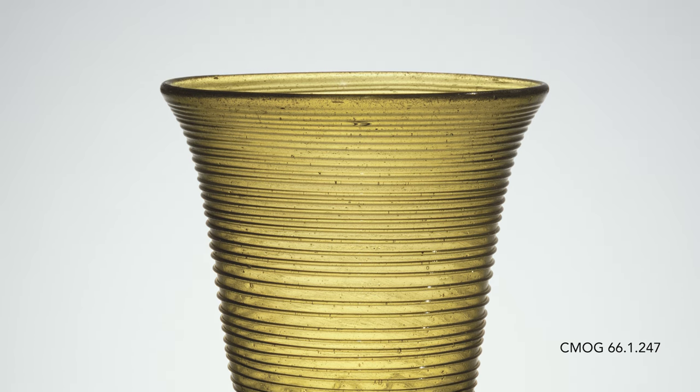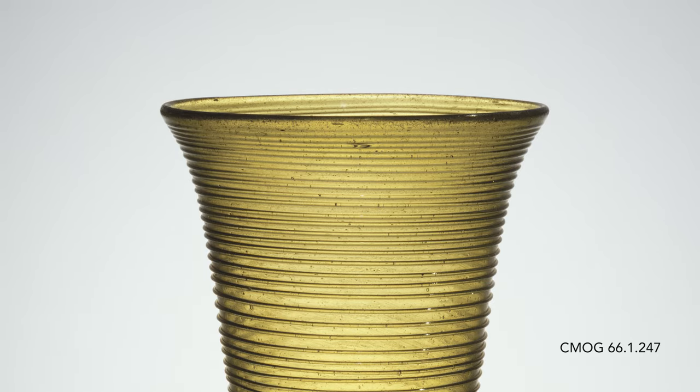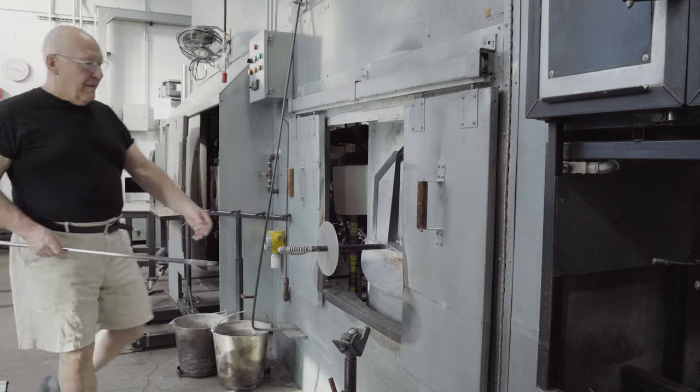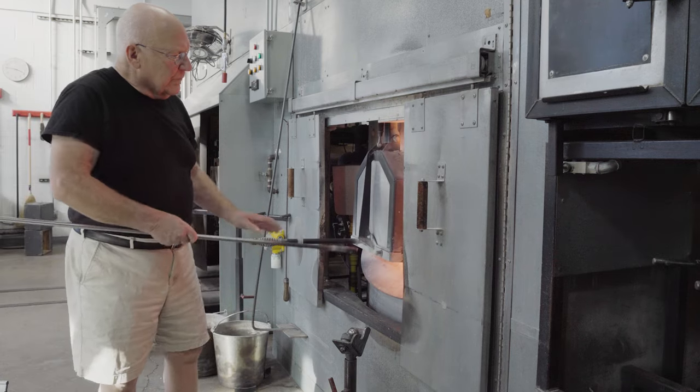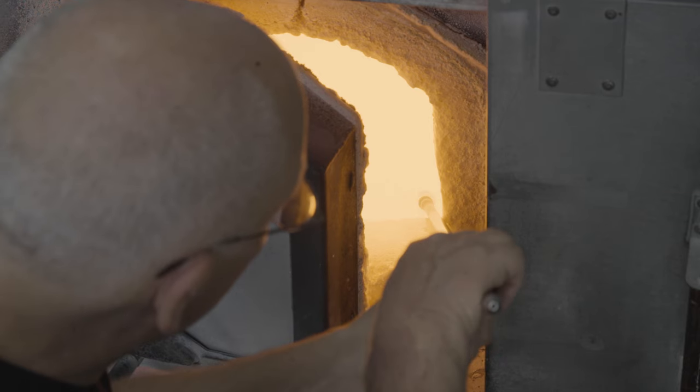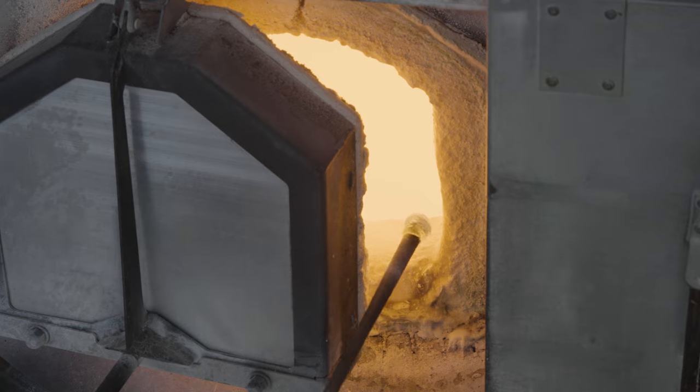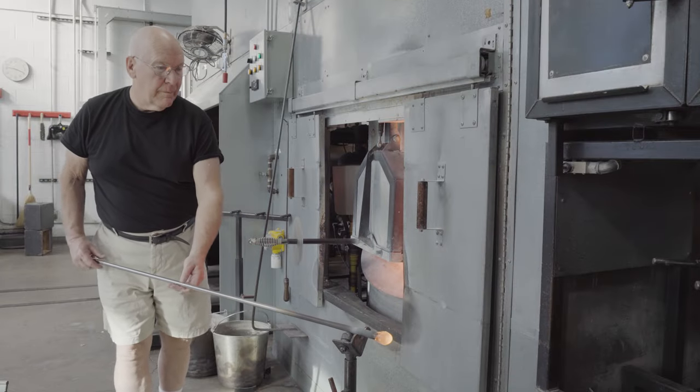This Corning Museum of Glass example is particularly fine. Kempston beakers are hefty beakers. They're rather thick walled and can be quite large, so it requires a lot of glass.